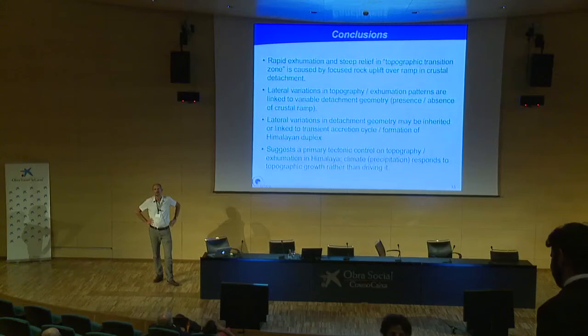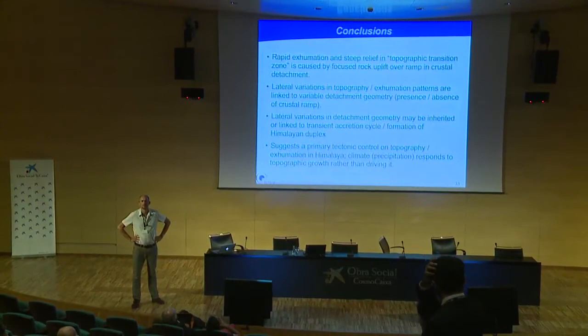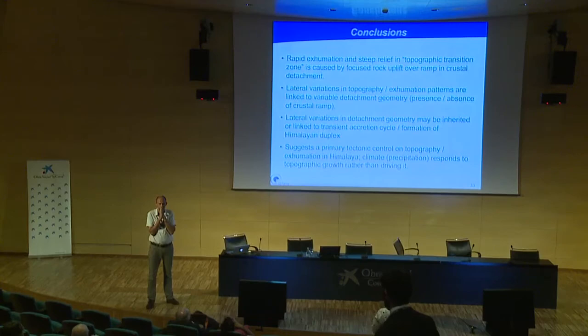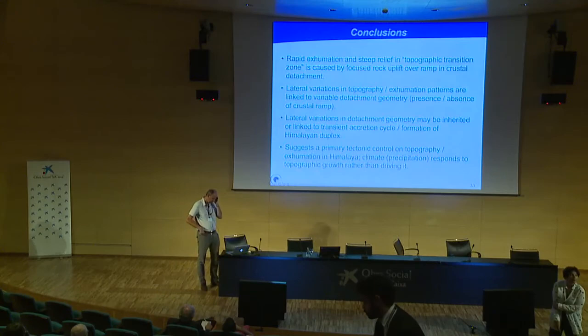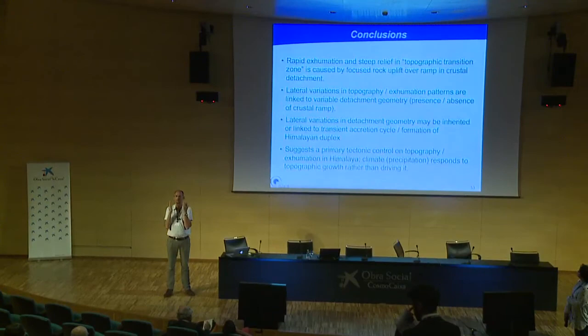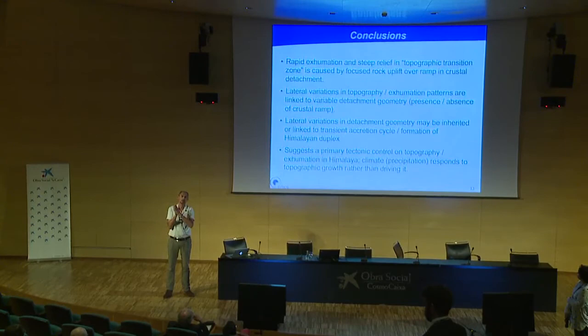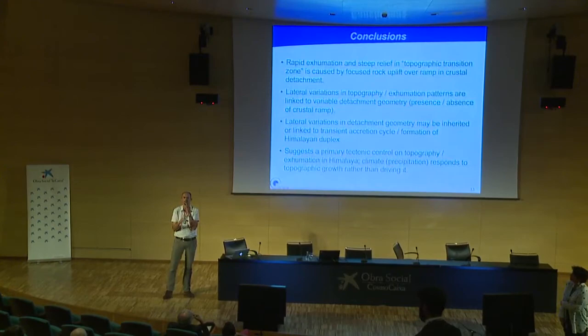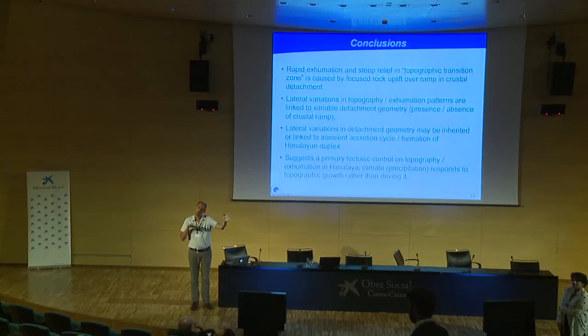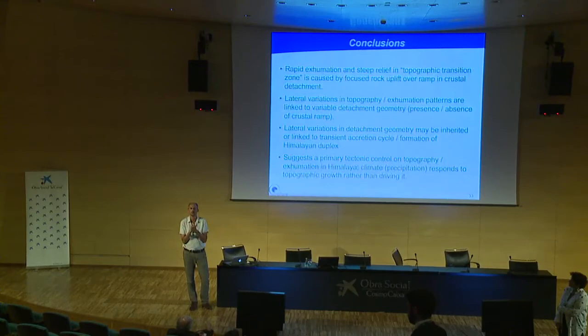In response to a question about lateral ramps: yes, in some cases we do see these lateral structures expressed in seismicity, topography, and erosion. Between eastern Nepal, Sikkim, and Bhutan there's the Yadong structure, long recognized as a significant lateral structure possibly associated with a lateral ramp. Between central and western Nepal, there are actually active structures — an active strike-slip fault that could be accommodating the change in detachment geometry. In other cases they're more subdued, but we haven't really been looking for them either.